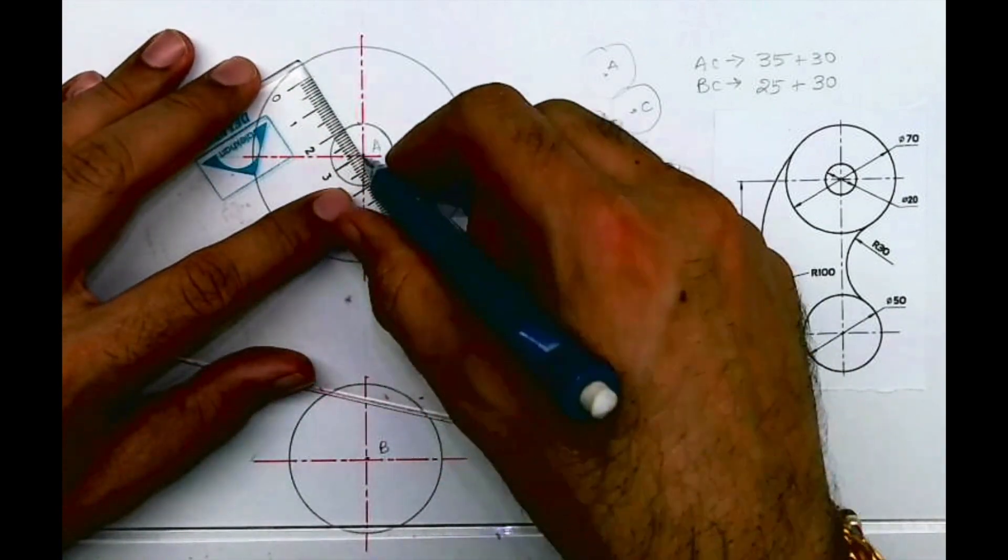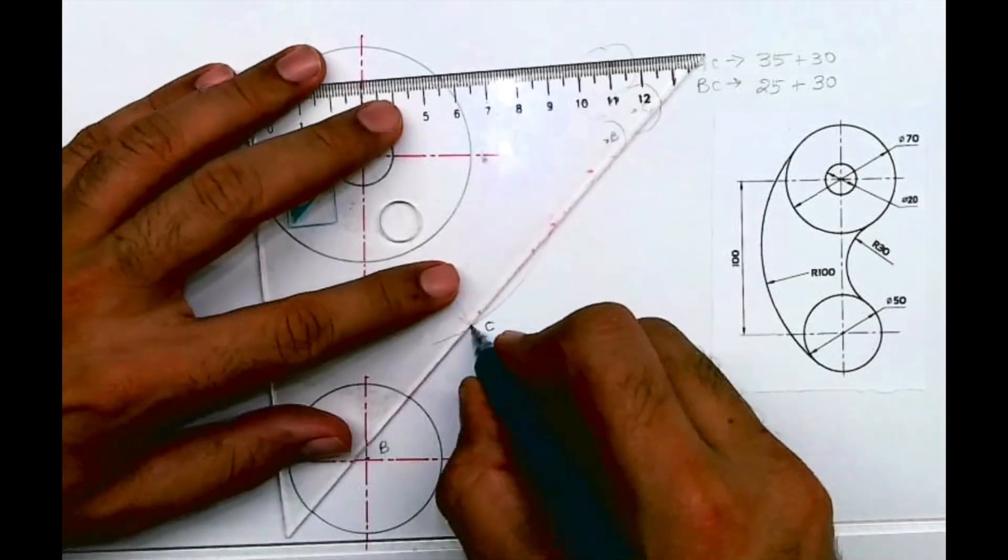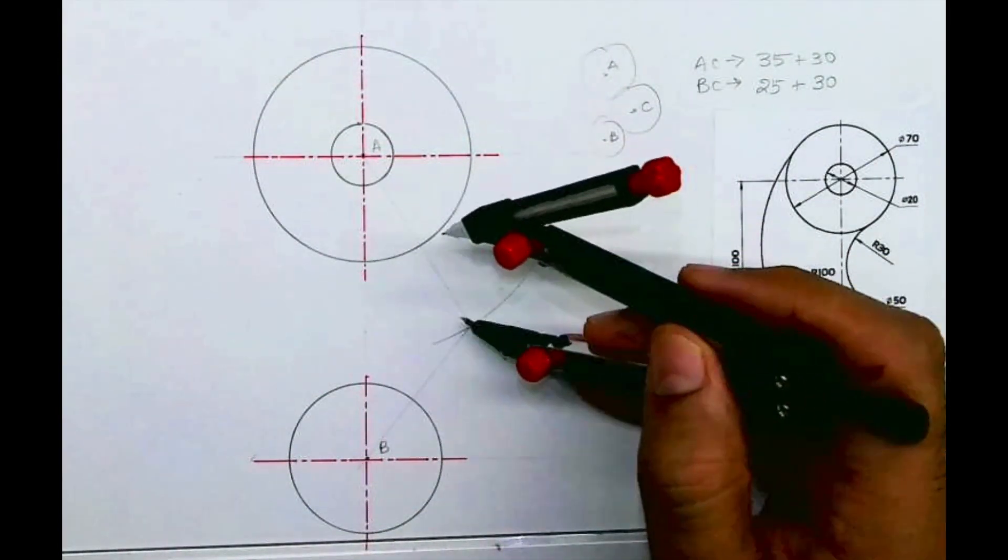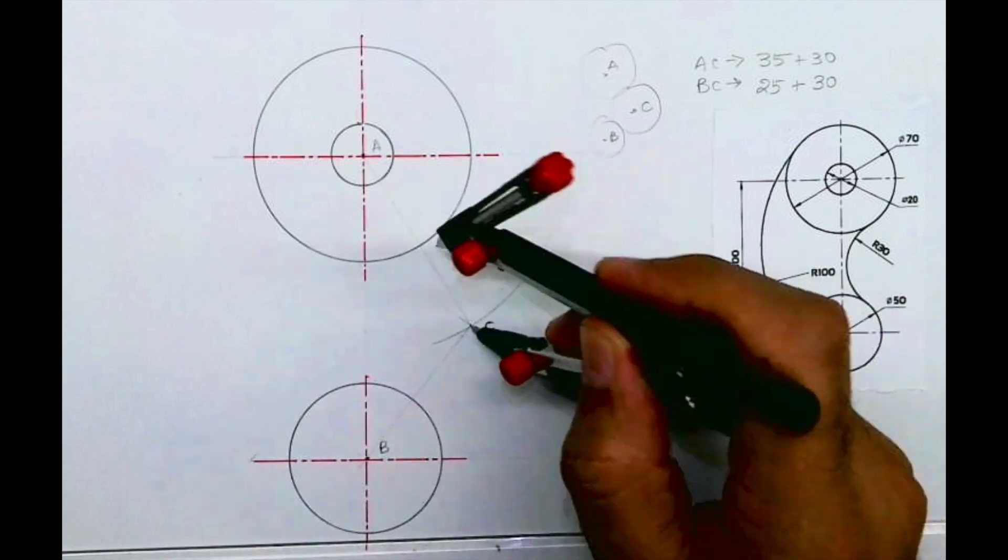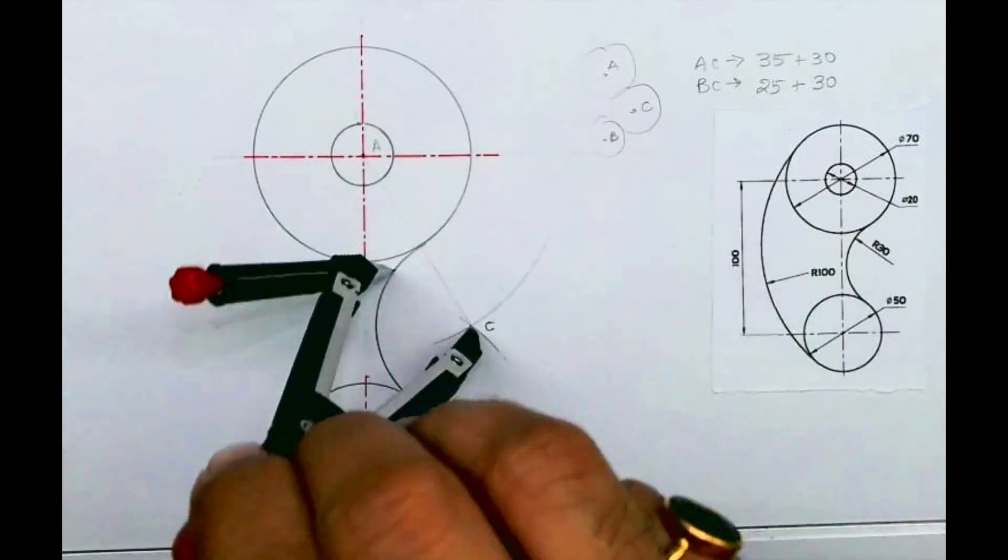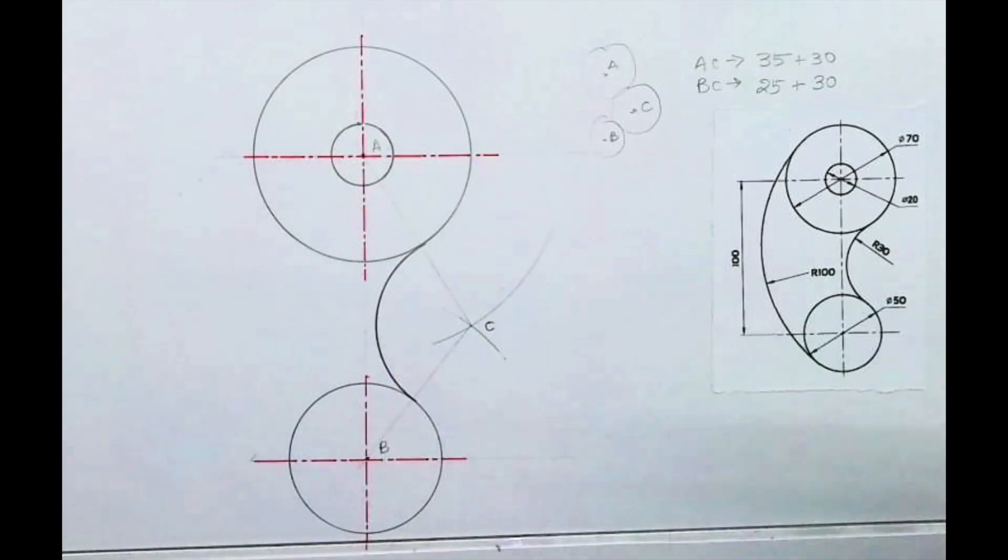Remember, joining CA and BC is not compulsory, but it is only to get those two important points from where you'll be able to see the arc clearly. Otherwise it will merge with the circle. It's called the connecting point.